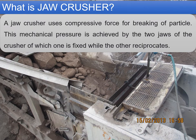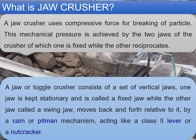A jaw crusher uses compressive forces for breaking particles. This mechanical pressure is achieved by two jaws, of which one is fixed while the other reciprocates. The jaw or toggle crusher consists of a set of vertical jaws — one jaw is kept stationary called the fixed jaw, while the other, called the swing jaw, moves back and forth by a cam or pitman mechanism acting like a class 2 lever or nutcracker. The jaw crusher is generally used as a primary crusher where boulders are crushed to a defined size.